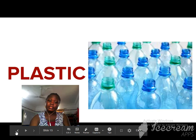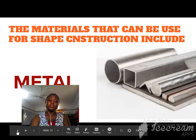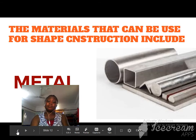There is plastic. There is wood. There is paper. There is metal. These are the materials we use for shape construction.